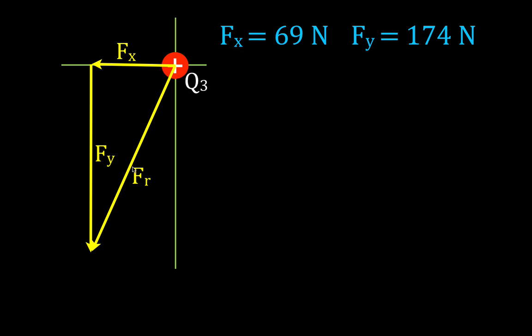Now once again, we have trig, Pythagorean theorem. In this case, we know the two sides, and we want to figure out the hypotenuse and the angle. I'm going to designate this as the angle, theta. And in order to find the angle, I'm going to use the tangent, because I know the tangent is the opposite over the adjacent. The opposite is Fy, the adjacent is Fx. I'm going to divide Fy by Fx. Fy is 174, Fx is 69.